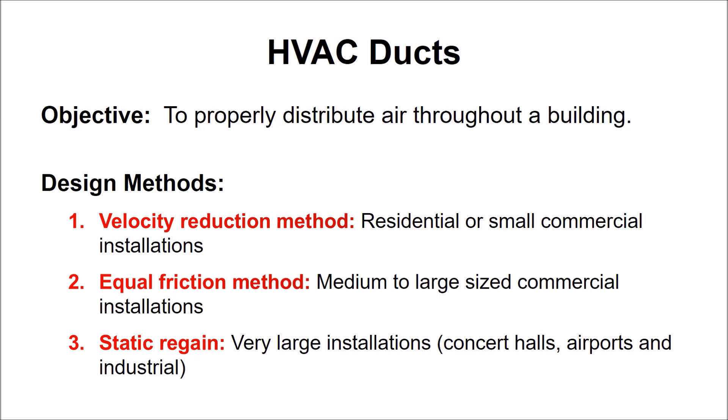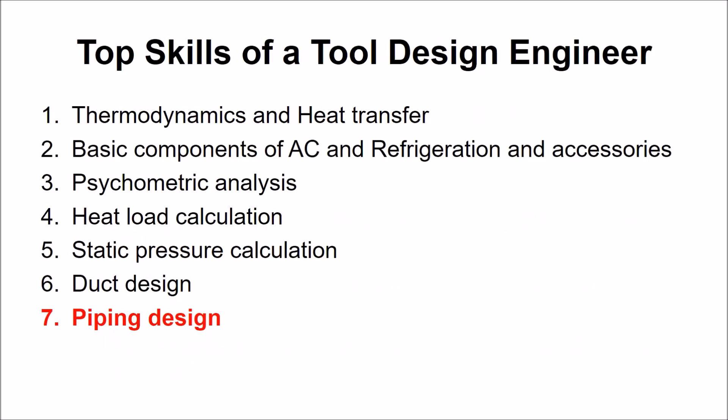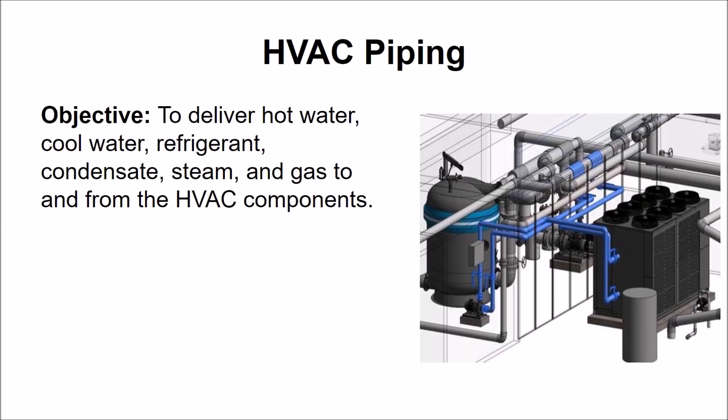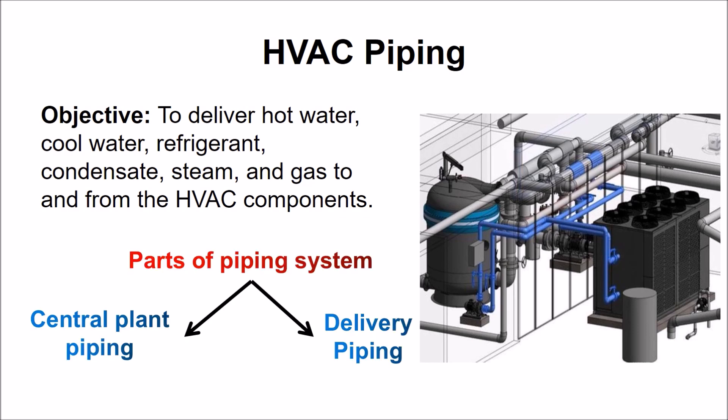Seventh is piping. HVAC piping delivers hot water, cool water, refrigerant, condensate, steam, and gas to and from the HVAC components. HVAC piping systems can be classified into two parts: the piping in the central equipment room and delivery piping. The central equipment room consists of pipe networks connected to rotating equipment and tanks, such as heat exchangers and pumps. From these regions, the piping network transports the process liquid to other parts of the building using the delivery piping.